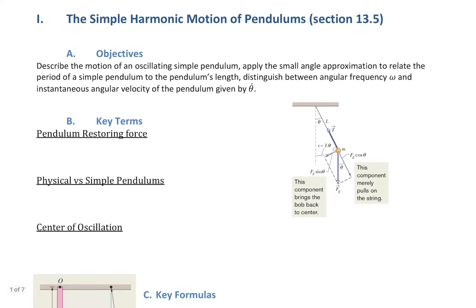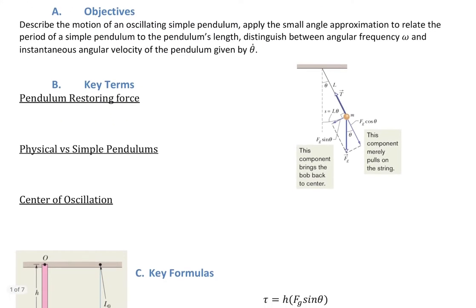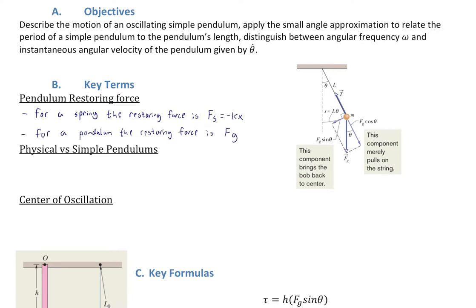We're talking all about pendulums here — something swinging back and forth under the force of gravity. For a spring, the restoring force is the spring force, defined by Hooke's law, which always opposes motion and wants to restore the spring to its rest length. For a pendulum, the restoring force is gravity, because gravity wants to bring the pendulum back down to the bottom of the swing. This is what makes both systems harmonic oscillators — they both have a force that returns the object to its equilibrium point.